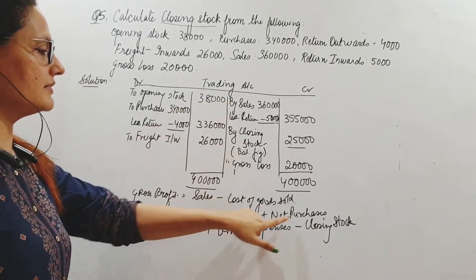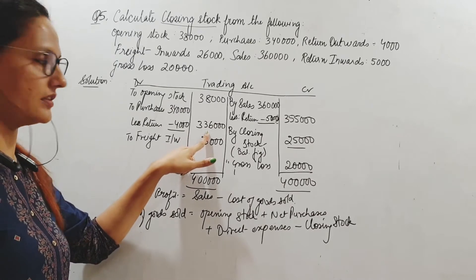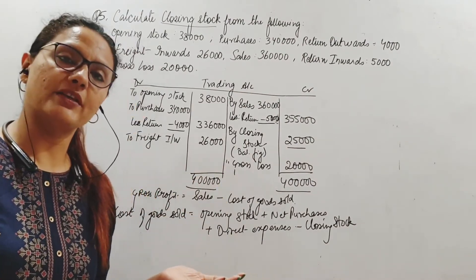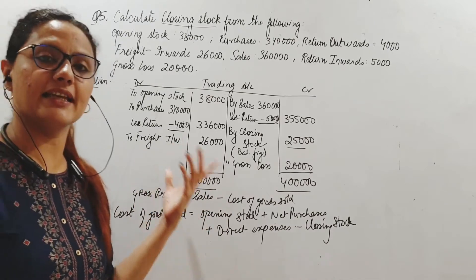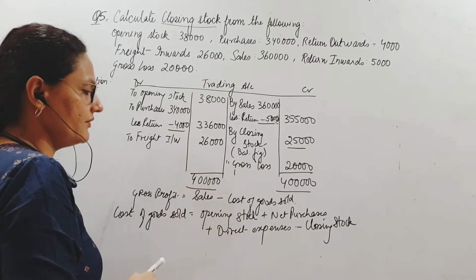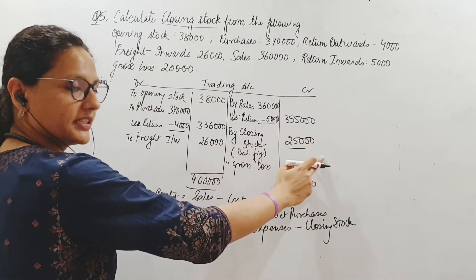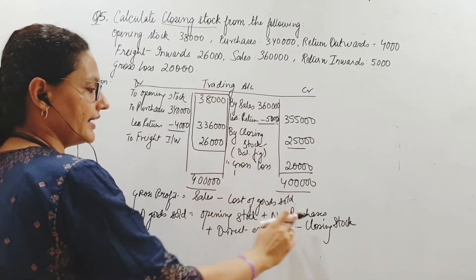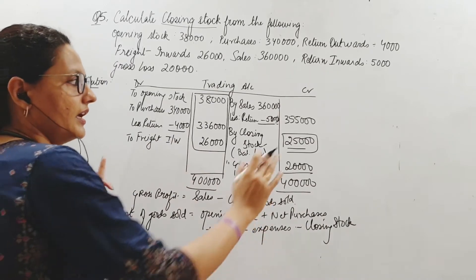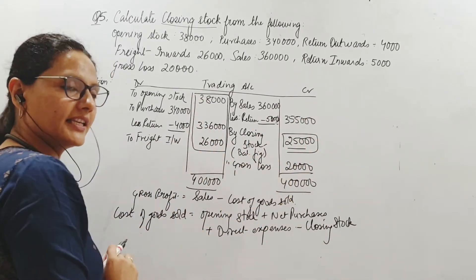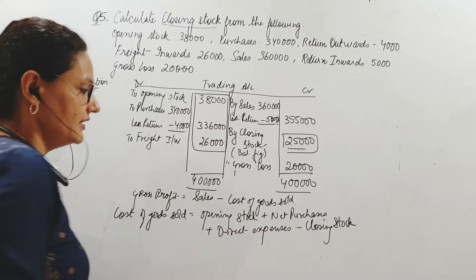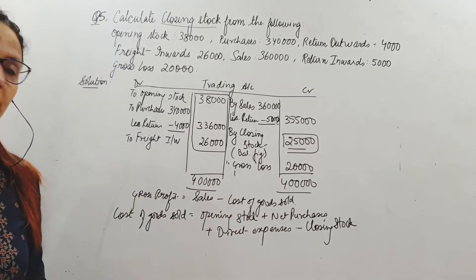Net purchases means purchases minus returns. Direct expenses — there might be other factory-related expenses also: direct wages, manufacturing expenses, factory heating and lighting, fuel and power — all those can be added here. So we add all of these and subtract closing stock, meaning put it on the credit side. This gives cost of goods sold. Sales minus cost of goods sold gives either gross profit or gross loss, depending on the amounts.